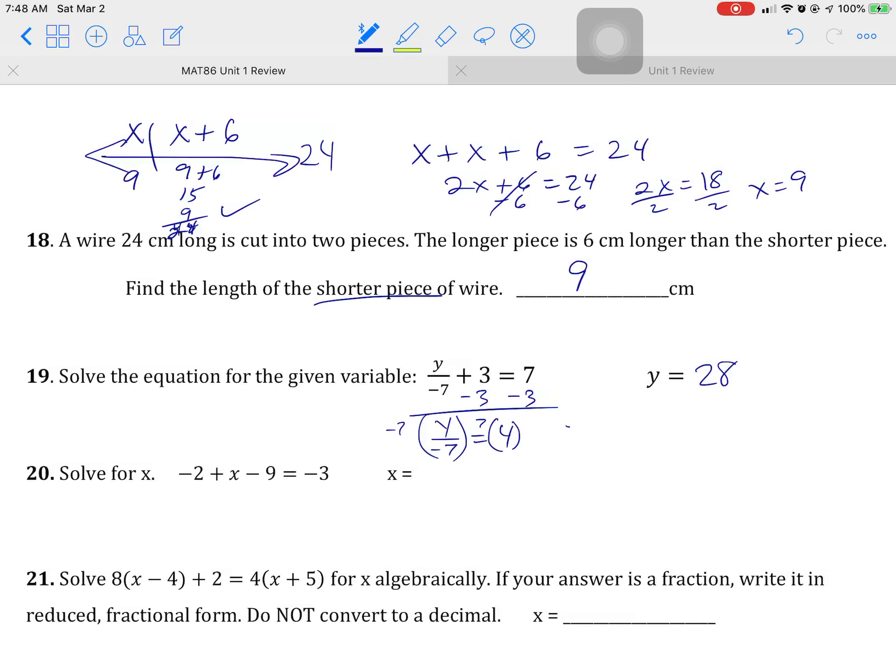This would be Y equals 28. For number 19, what does it say on the key? Oh. Did I drop my negative? I dropped my negative. So if you wanted to clear the fraction and multiply everything by negative 7, negative 7, negative 7, it will give you Y minus 21 equals negative 49 plus 21. Y equals negative 28. Either way.